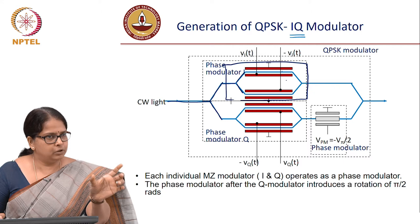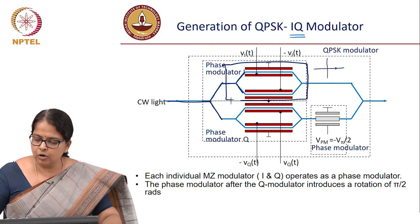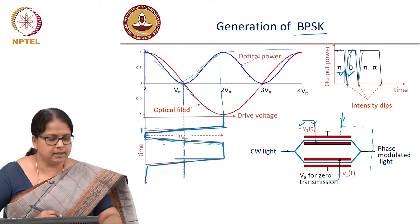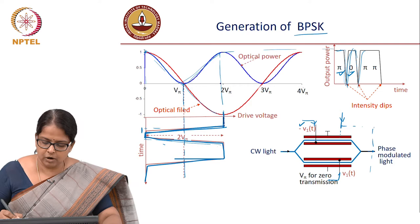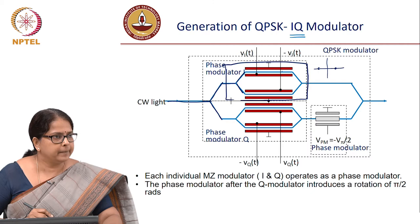How do you bias it? Bias it at the null and operate at 2 V_pi. So in the constellation, you get zero phase and pi phase. If your input was high, you got minus phase (pi phase); if your input was low, you got plus phase (zero phase). So you got your zero and pi in the first modulator.